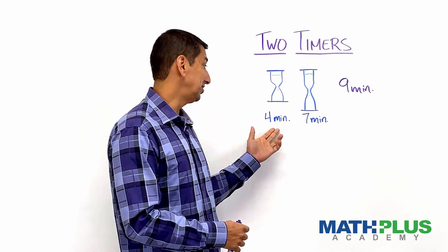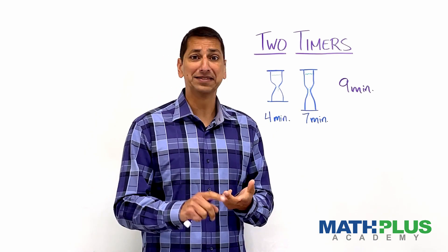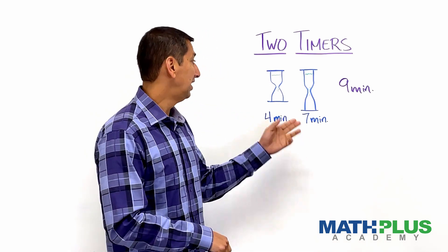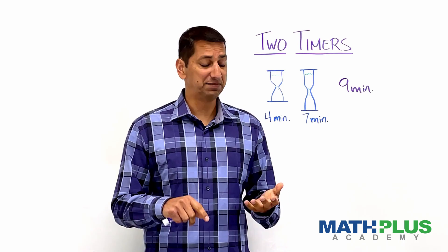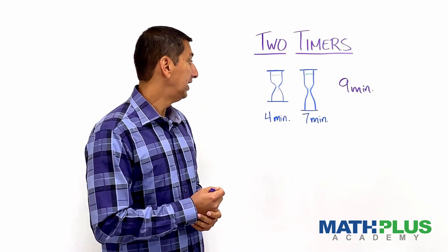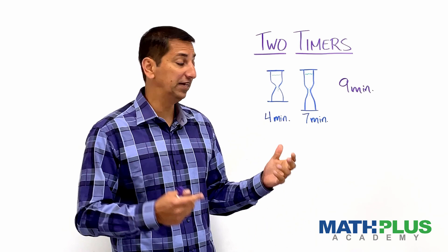Clearly, with just the four, I can measure four minutes and eight minutes and 12 minutes. And with just the seven, I can measure seven and 14 and 21 and so on. And I could even see how I could measure 11, right?